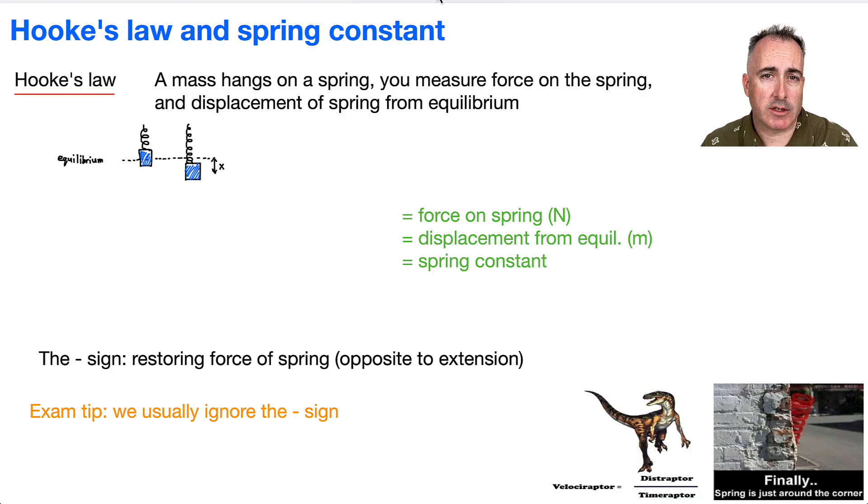So we're going to have an equation, and it's in your data booklet, which is nice. F_H, which stands for Hooke's law, so the force due to Hooke's law, is going to be equal to minus K times X. That's it.